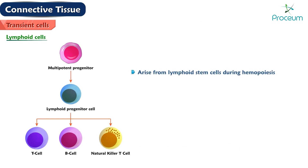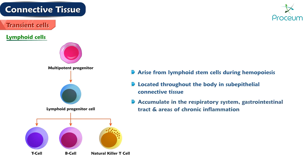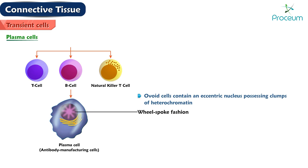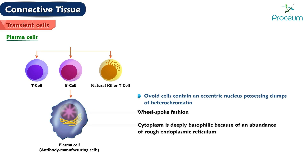Lymphoid cells arise from lymphoid stem cells during hemopoiesis. They are located throughout the body in the sub-epithelial connective tissue and accumulate in the respiratory system, gastrointestinal tract, and elsewhere in areas of chronic inflammation. Plasma cells are antibody manufacturing cells that arise from activated B lymphocytes. These ovoid cells contain an eccentric nucleus with clumps of heterochromatin arranged in a wheel-spoke fashion, and their cytoplasm is deeply basophilic due to an abundance of rough endoplasmic reticulum. They are most abundant at wound entry sites or in areas of chronic inflammation.